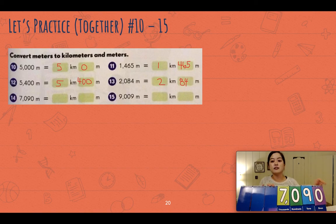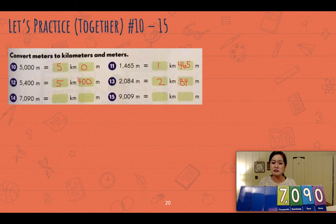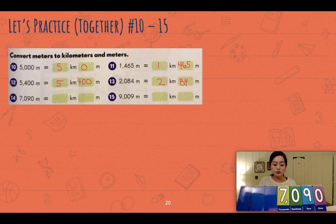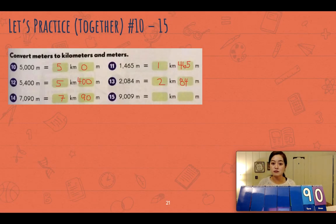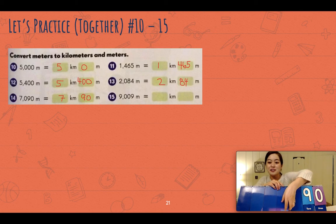Let's try number fourteen: seven thousand ninety. How many thousands are there? There are seven thousands, so that's seven kilometers. What are the leftover meters? There's a zero in the hundreds place, so it's 90 meters. The answer to number fourteen is seven kilometers and 90 meters.